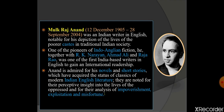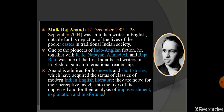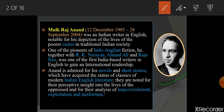Before we proceed further, let's first know something about the author. So Mulk Raj Anand — you can see the picture on the right-hand side — he was born on 12th December 1905 and he died on 28th September 2004.